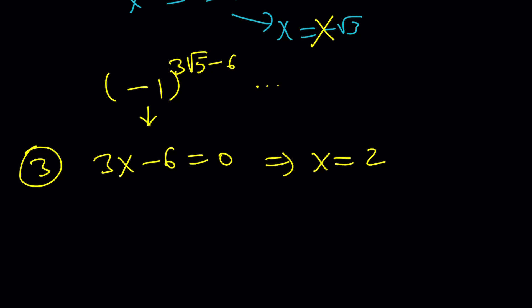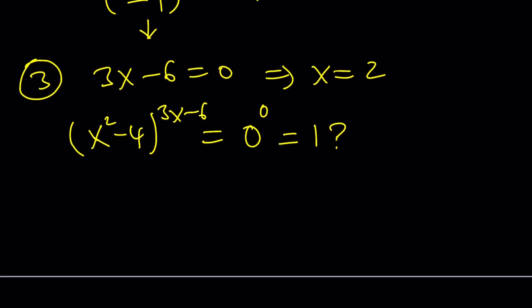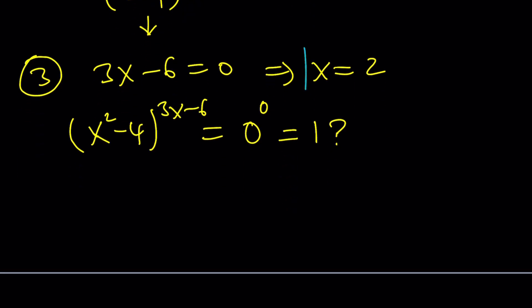x squared minus 4 over 3x minus 6. x squared minus 4 is also going to be 0. And I'll be getting 0 to the power of 0. Wait a minute. Is that 1? That's a good question. Now, if you don't think it's 1, go ahead and watch this video. Hopefully, you'll be convinced or change your mind. Anyways, so that's going to give us another solution. And let's go ahead and talk a little bit about the complex cases.